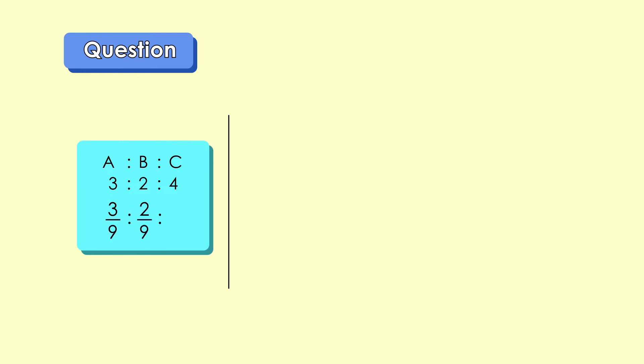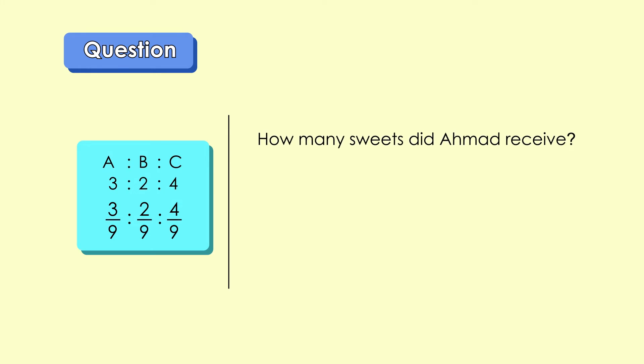So now, let's solve the problem. How many sweets did Ahmad receive? Three over nine times 36 sweets in total — Ahmad received 12 sweets. As we know, the percentage is three over nine parts per hundred. So, to find the percentage of Ahmad as represented in fraction, three over nine, we multiply with 100% and we get 33.33% for Ahmad.